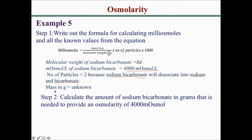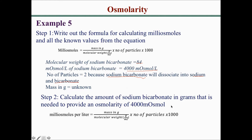Step 2 is to calculate our unknown, which is the amount of sodium bicarbonate in grams needed to provide an osmolarity of 4,000 milliosmol. Going back to the formula — milliosmol per liter equals mass in grams divided by molecular weight times number of particles times 1,000 — and rearranging for mass, we get a new formula: mass in grams equals milliosmol times molecular weight, divided by number of particles times 1,000.